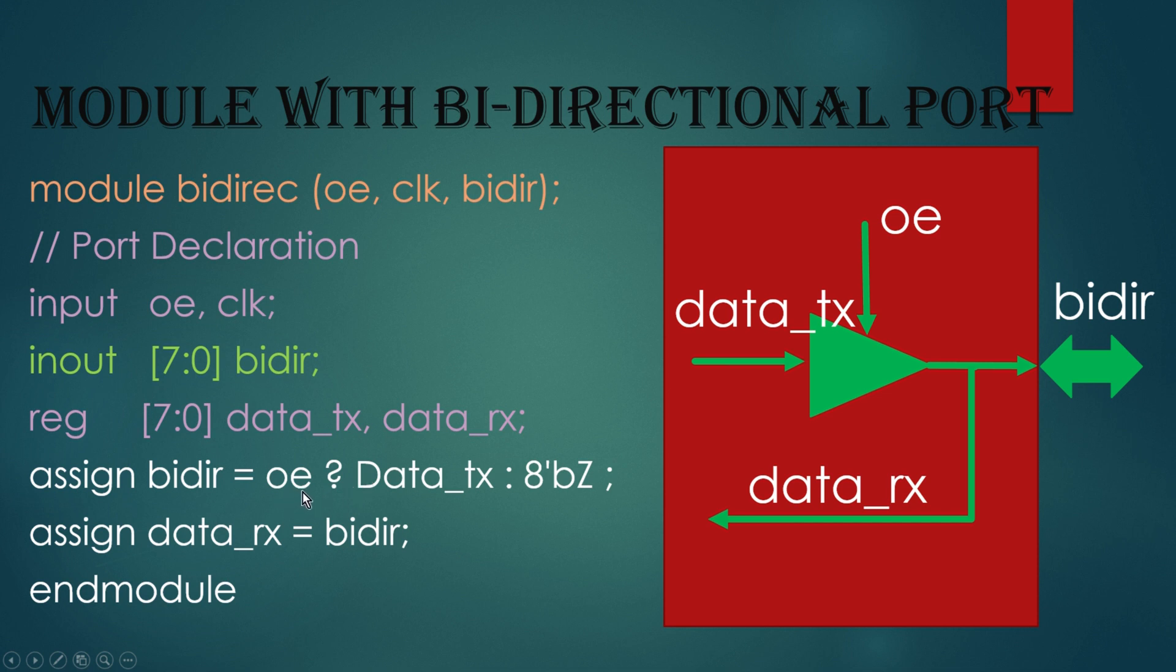If this OE is zero, then this bi-directional port will be in a high impedance state. And DataRx will always be equal to bi-directional port.